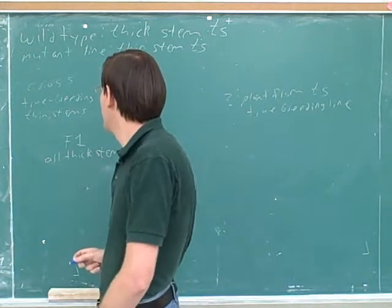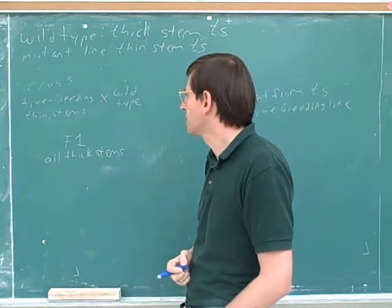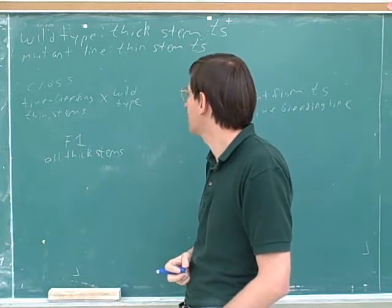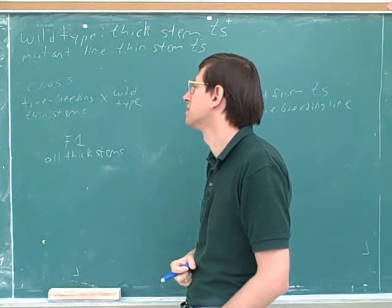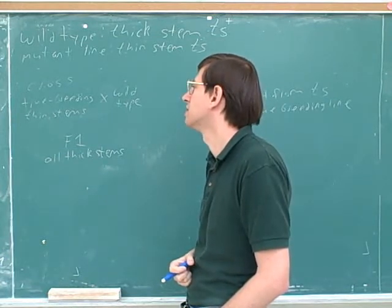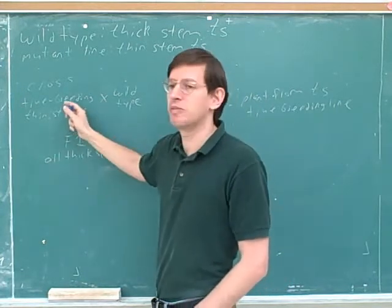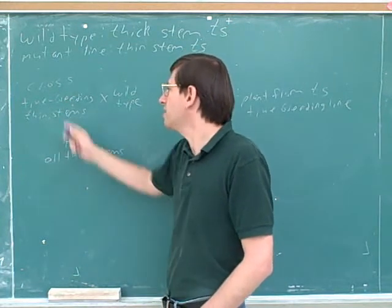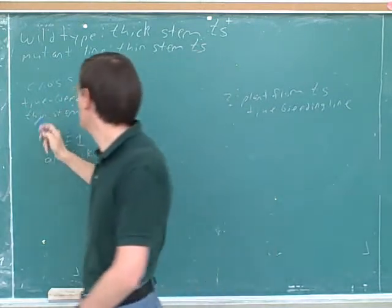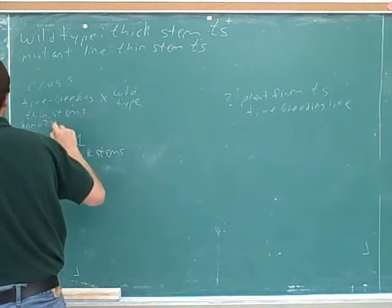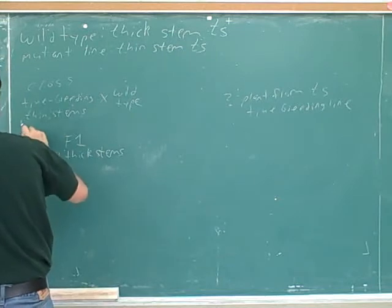We're going to figure out one thing at a time. Here we have some true breeding thin-stemmed plants. Does that tell us whether the thin trait is dominant or recessive? No, I think it just tells us that it's homozygous. Right — it just tells you that these plants are homozygous. If they were heterozygous, then every once in a while the two recessive genes would come together and give a different outcome. So we know that these are homozygous.